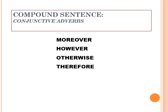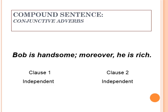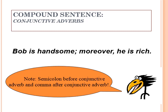A compound sentence can also use conjunctive adverbs like moreover, however, otherwise, and therefore. For example, 'Bob is handsome' is one independent clause and 'he is rich' is another, linked with the conjunctive adverb 'moreover.' When this is the case, there will be a semicolon after the first independent clause and a comma after the conjunctive adverb.